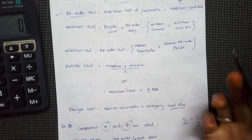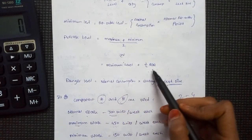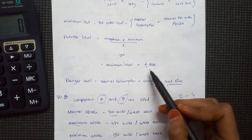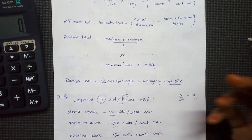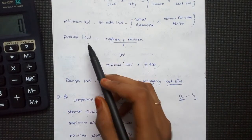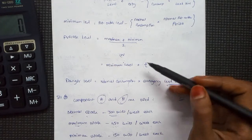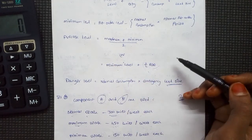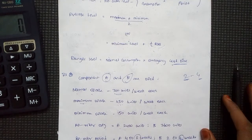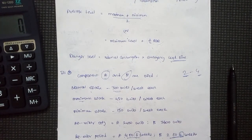Sometimes we don't need to use the standard average formula. We can modify it: minimum level added to half of the reorder quantity. The answer is the same. The standard formula uses minimum level plus half of the reorder quantity. If it's a danger level, it means the stock level is already running critically low. For danger level, the formula is: normal consumption multiplied by emergency lead time.